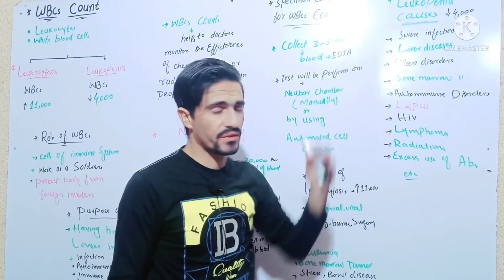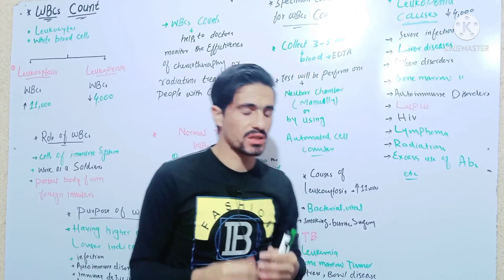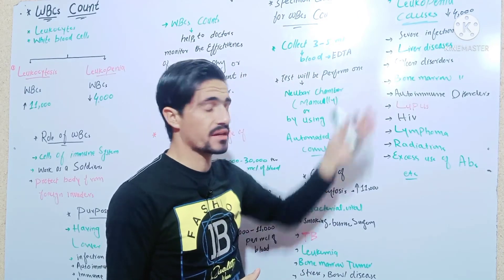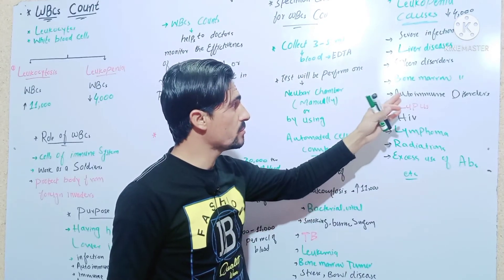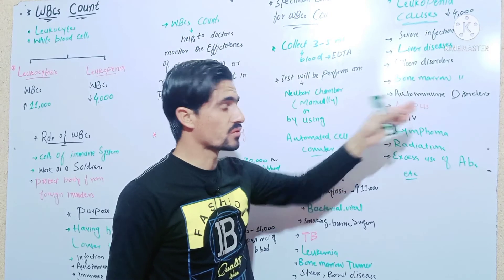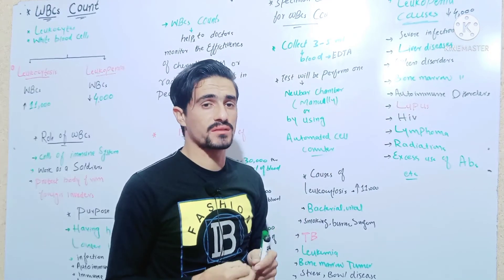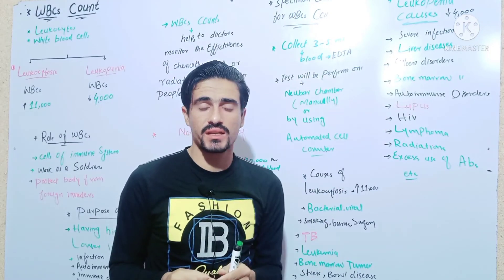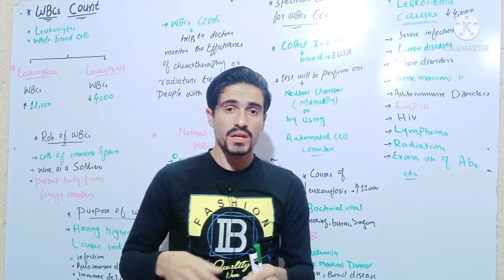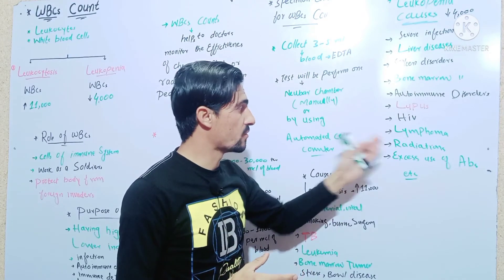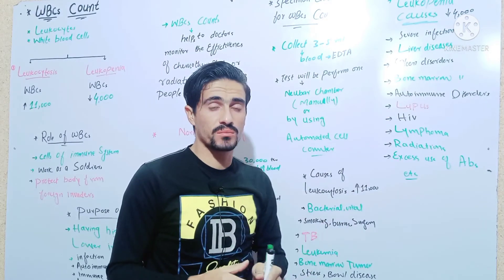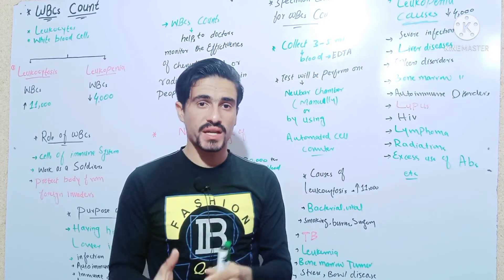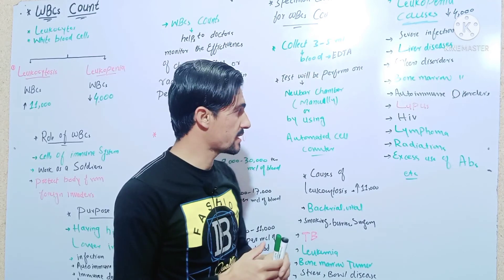Leukopenia causes include very severe infections, liver disease, bone marrow suppression, and immune deficiencies. Other causes are lupus, HIV — human immunodeficiency virus — and lymphoma, which is a cancer of the lymphocytes.